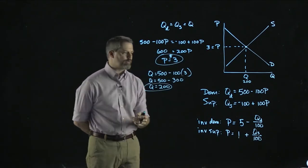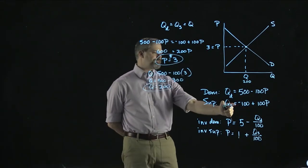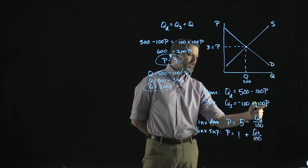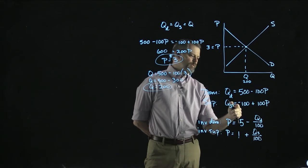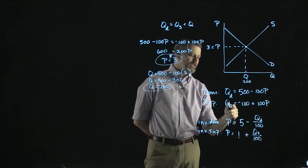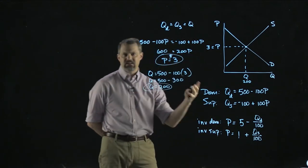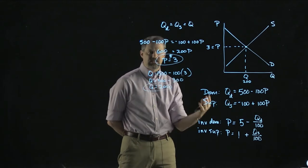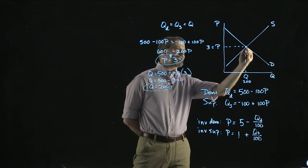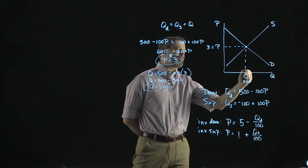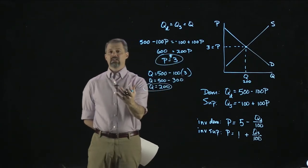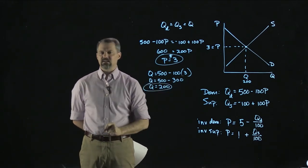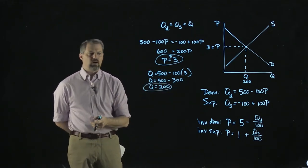Each unit will be sold and bought at $3. Notice that if we plug that price back into the supply curve, we get Q equals negative 100 plus 300, which equals 200 — the exact same quantity. You can plug the equilibrium price into either curve and get the same quantity, because the curves cross at that point. We've mathematically solved for the equilibrium price and quantity.